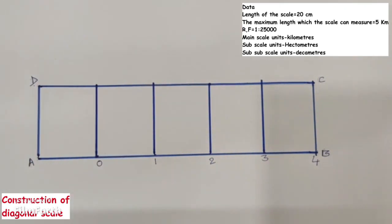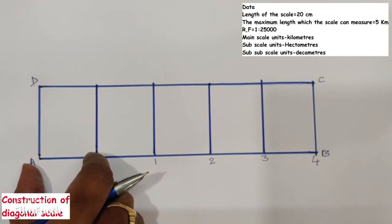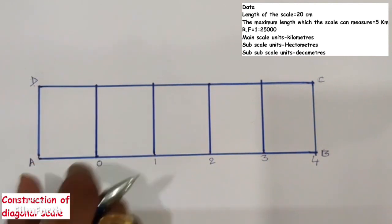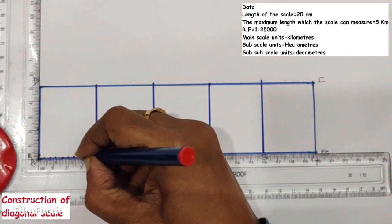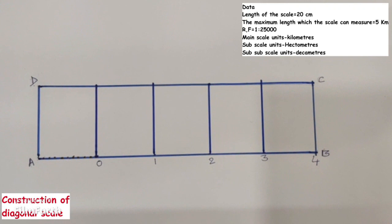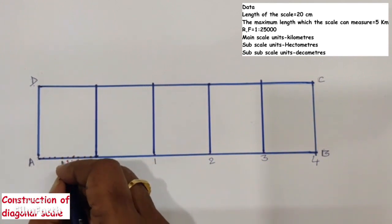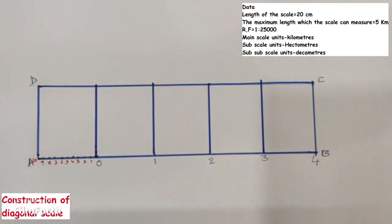In this problem, the immediate subunits for kilometers are hectometers. So we divide the first main scale unit (1 kilometer) into 10 equal parts, because 1 kilometer equals 10 hectometers. Number the subscale units from 0 in the leftward direction: 1, 2, 3, 4, 5, 6, 7, 8, 9, 10. Each unit on the subscale represents 1 hectometer.